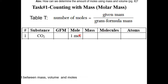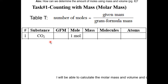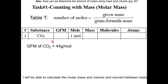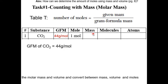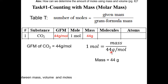Let's say we have one mole of CO2. Let's complete the table and figure out the GFM, the mass, the number of molecules and atoms. From the periodic table, you can add up the atomic masses of carbon and oxygen and get the GFM of CO2, which is 44 grams per mole. To get the mass, plug it into the equation: one mole equals mass over 44, so the mass is 44 grams of CO2. If you have 44 grams of CO2, you have one mole of CO2.